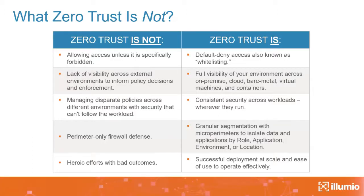It's useful to think about what zero trust is not. Instead of allowing access unless it's specifically forbidden inside the network, we have a default deny posture based on whitelisting. Instead of having no insight into our environments, we need high visibility across everything to understand them, inform policymaking, and ensure consistent enforcement — rather than five disparate environments we can't govern consistently. We need consistent security across workloads wherever they run. Instead of perimeter-only firewall defense, we need microperimeters to isolate data and applications according to business logic. And it needs to work in practice — it can't be a mountain-moving failure when it comes to deployment.